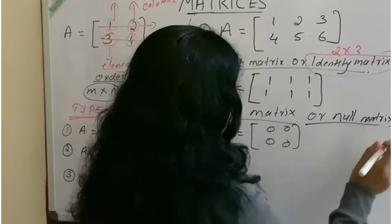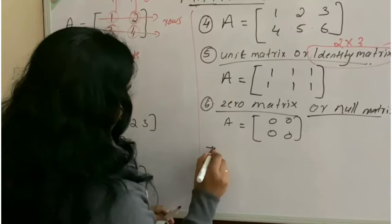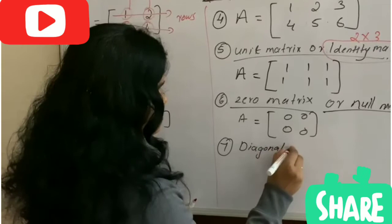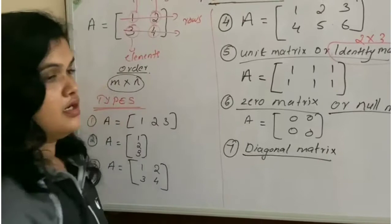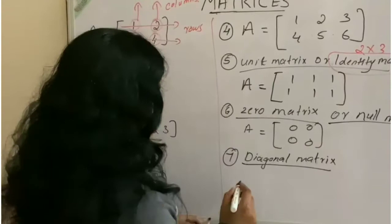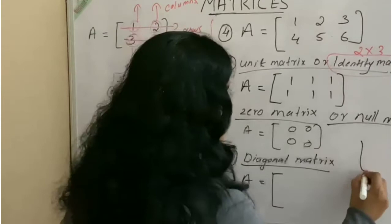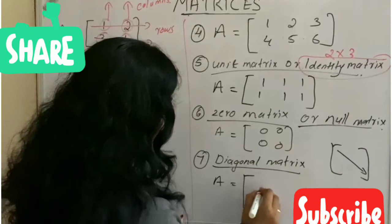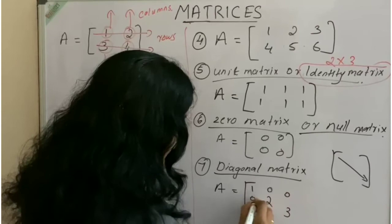All the elements are zero. Our final category is diagonal matrix. In this category, it is a square matrix and its all elements are zero except the leading diagonal. Leading diagonal means, in a matrix, this is the leading diagonal, one two three, and the remaining ones are zero.